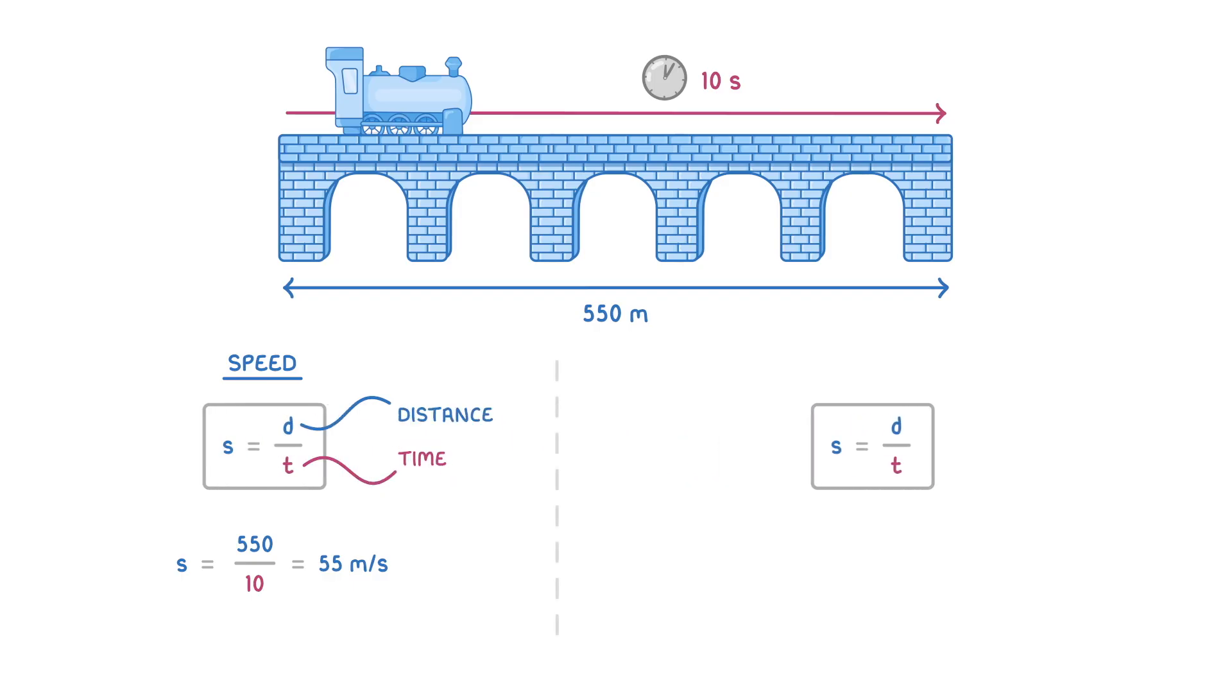If we took this same equation, but replaced the scalar quantity of distance travelled with the vector quantity of displacement, we'd then be able to get the vector quantity of velocity. If we knew the direction that the train was travelling in, for example east, then instead of writing the distance, we could write the displacement, which would be 550m east. The time would still be 10 seconds, and the velocity would still have a value of 55, but the units of the velocity would be metres per second east, rather than just metres per second, like we've got for speed.